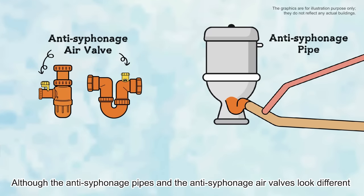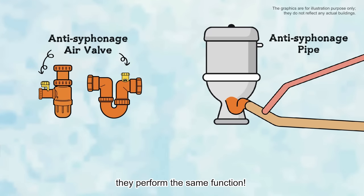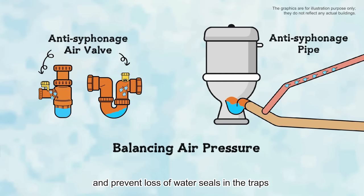Although the anti-siphonage pipes and the anti-siphonage air valves look different, they perform the same function. They balance the air pressure and prevent loss of water seals in the traps, so as to minimize health risks.